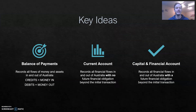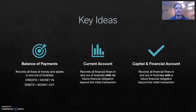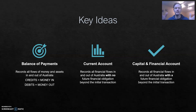Let's recap on some key ideas. The balance of payments is the area in which all flows of money and assets in and out of Australia are recorded — we're only talking international transactions here. The second part is the idea of credits and debits. Credits are money flowing into the country and debits are money flowing out. A nice easy way to remember it: when you use your debit card, money flows out of your account.